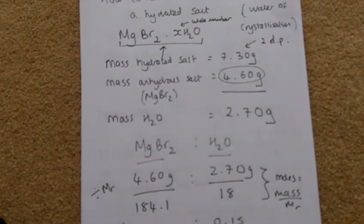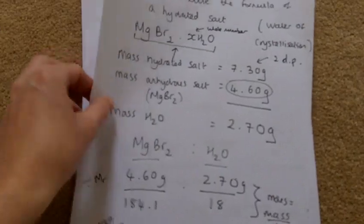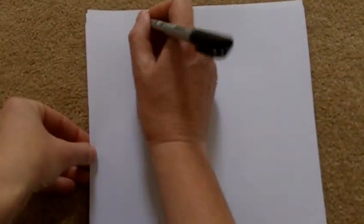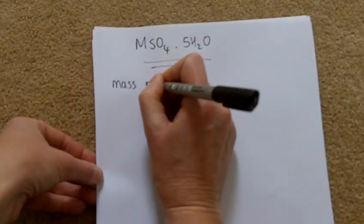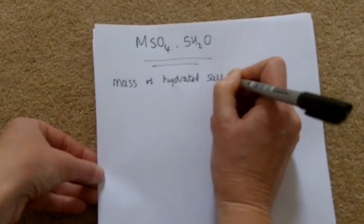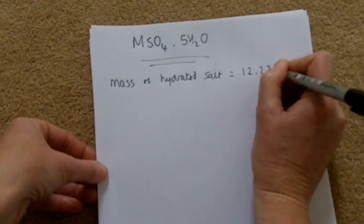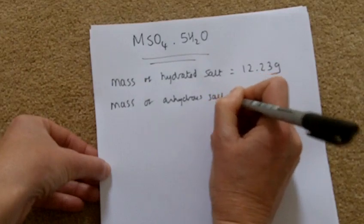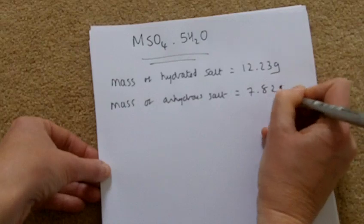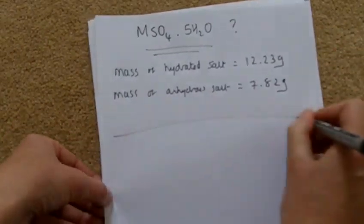I'm going to give you two questions to try yourself — bring the notes and answers to the lesson. Question one: find the formula of MSO₄·5H₂O. The information given is: mass of the hydrated salt equals 12.23 grams, mass of the anhydrous salt at the end equals 7.82 grams. Determine the formula.